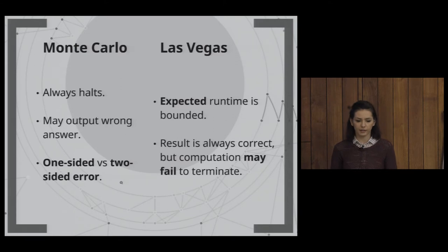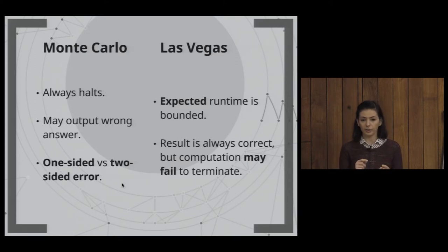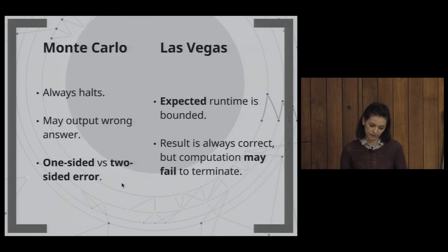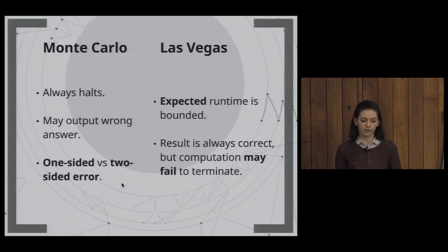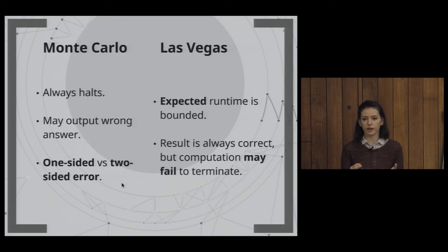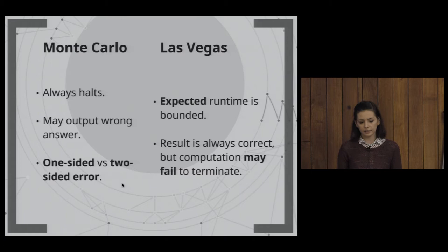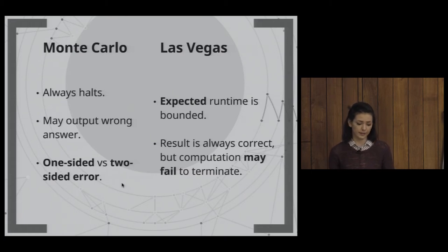If we can have an error in both the yes and no answers, it is a two-sided error. If yes is always correct and we can only have an error in the no answer, it is a one-sided error. Similarly, we could have an error in yes while no is always correct.